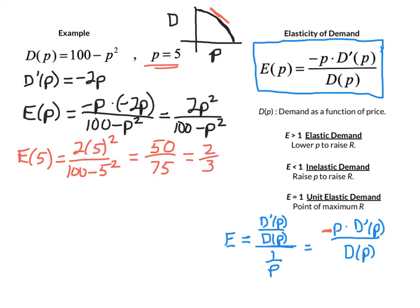So, what does this number mean? This is the relative rate of change of the demand to the price. This means that the demand is changing at a rate 2 thirds as fast as the price, or it's reacting less than the price change. And when that occurs, when the value of E is less than 1, we call that an inelastic demand.